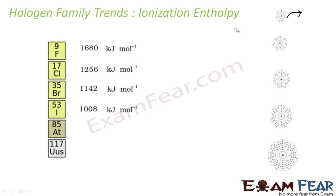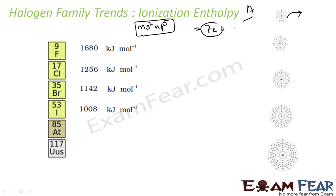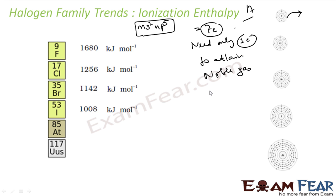These group 17 elements have an electronic configuration of NS2NP5. The outermost shell has 7 electrons. They need only one electron to attain noble gas configuration, and everybody wants to attain stability. Noble gases are stable, so these elements want only one electron to attain that configuration.